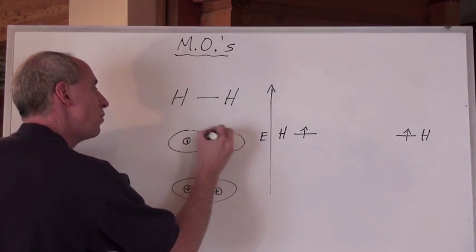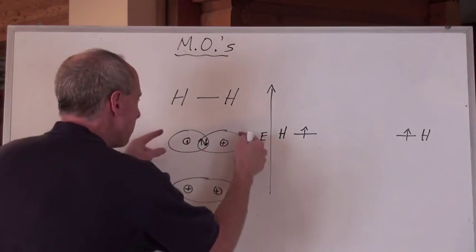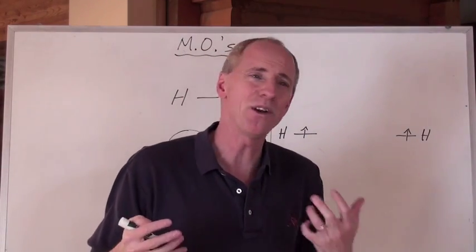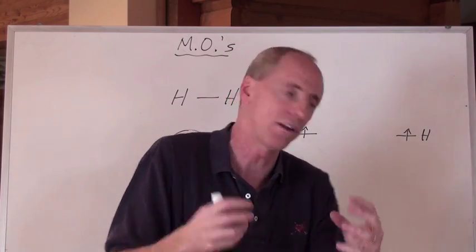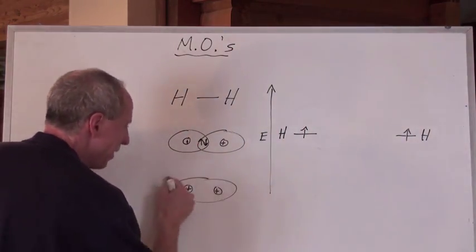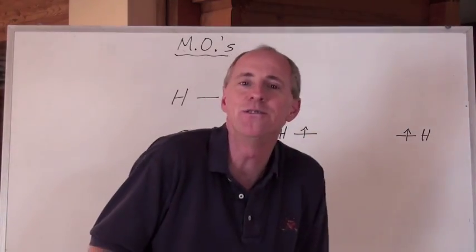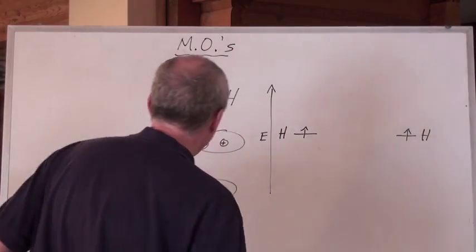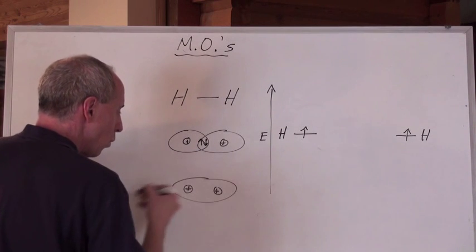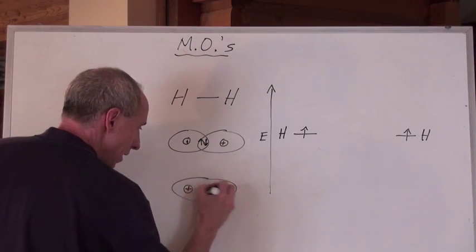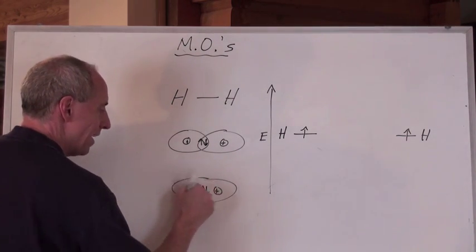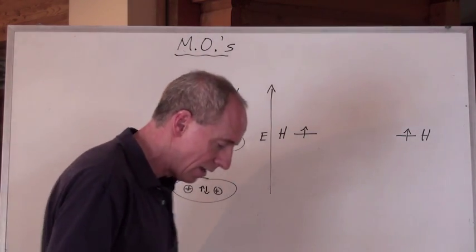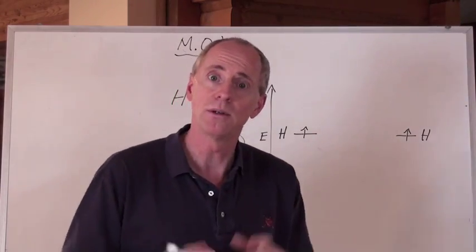These orbitals overlap, but they don't really exist as an overlap state. What we get is now a molecular orbital that forms. Here are the two nuclei. The bond that keeps everything together is going to be where an electron is here and here, in between the two nuclei, lowest energy position possible.